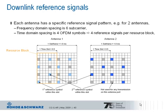LTE uses MIMO technology. One, two, or four antennas are used for transmission or reception. Depending on the MIMO mode — for example, spatial multiplexing — different data streams might be transmitted over the antennas. To ensure correct demodulation and decoding at the terminal side, the UE needs to distinguish between the different antennas. This is done with the help of the reference signals.